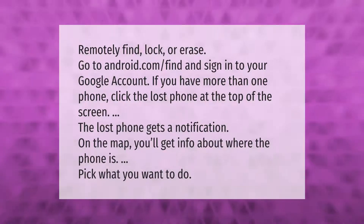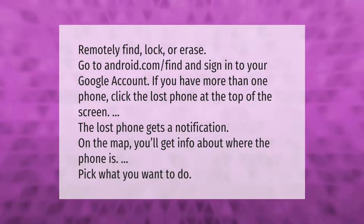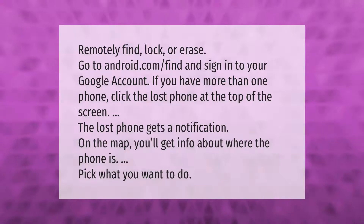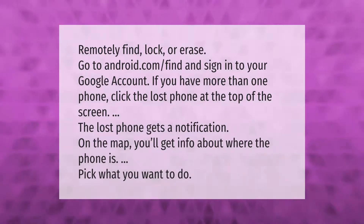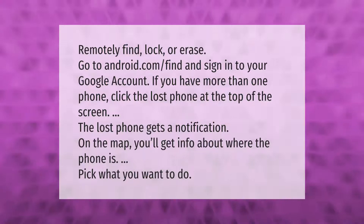To remotely find, lock, or erase your phone, go to android.com/find and sign into your Google account. If you have more than one phone, click the lost phone at the top of the screen. The lost phone gets a notification, and on the map you'll get info about where the phone is. Pick what you want to do.